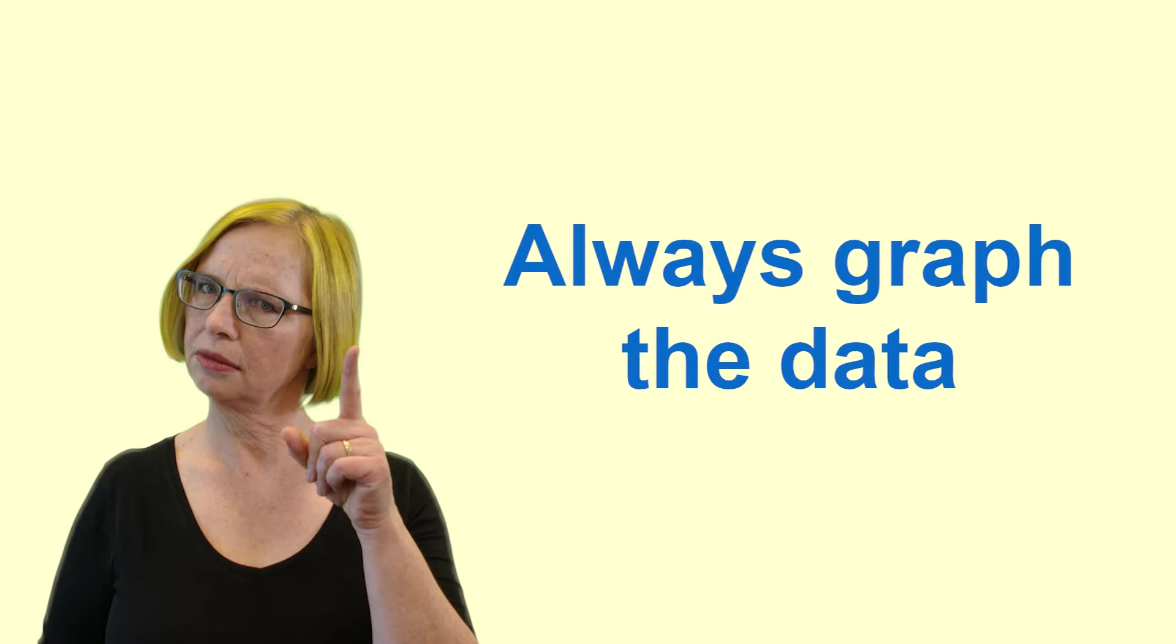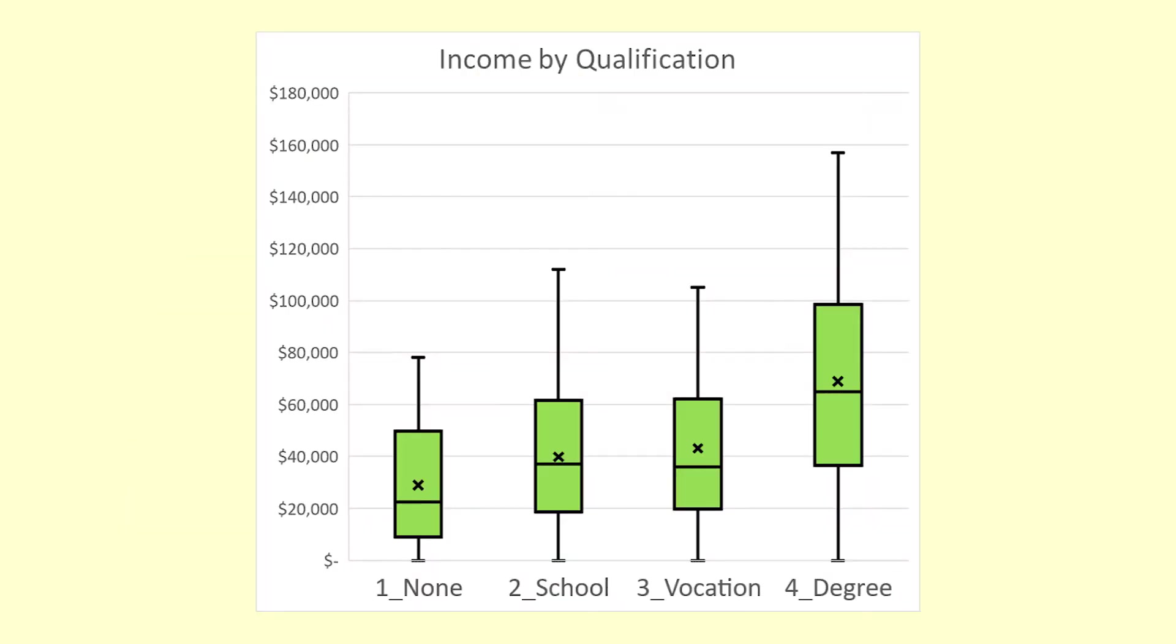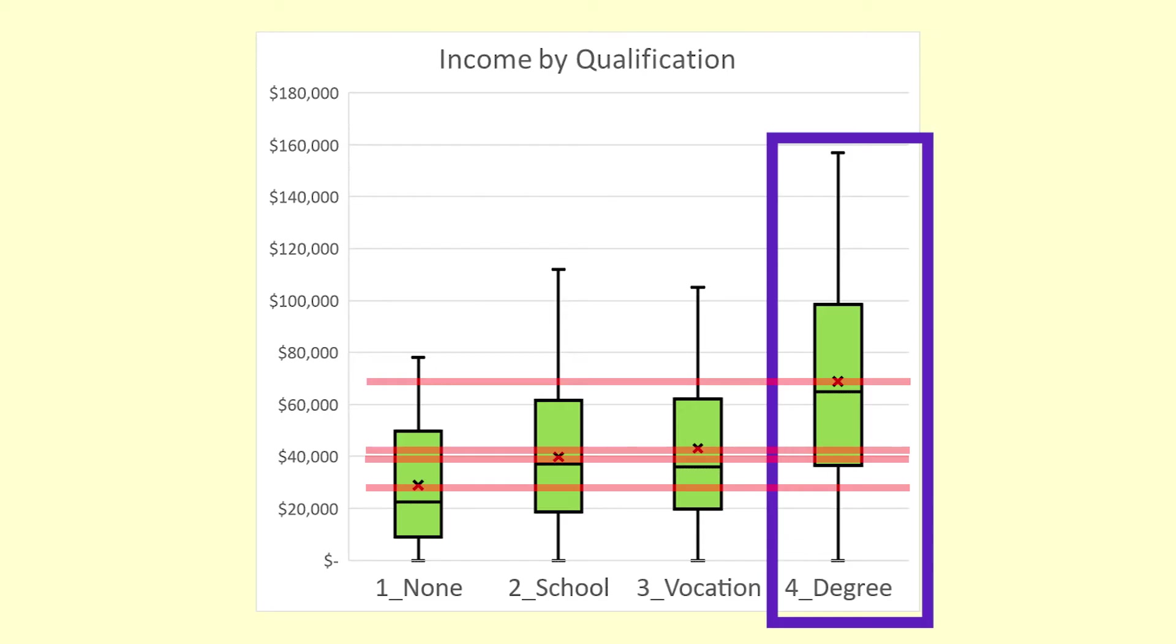Remember, always graph the data. I have used Excel to create comparative box and whisker plots for the different qualification groups. This helps us to see what is happening in this sample. You can see that in the sample people with degrees tended to earn more than those without degrees. The other means look similar to each other. There is considerable overlap between the groups as well.